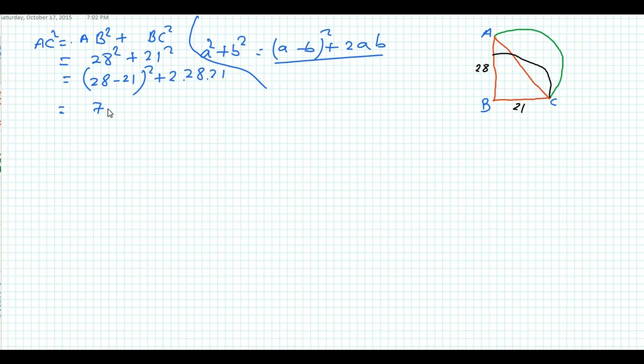It becomes 7 square plus 2 into 7 into 4 into 7 into 3. Why I have broken up this one? You can fill it later. 7 square plus 7 square plus 7 square into 2 into 4 into 3. 7 square times 1 plus 24, that's 25. It becomes 7 square into 25, that equals 7 square into 5 square. Therefore, AC equals 7 into 5, that equals 35.